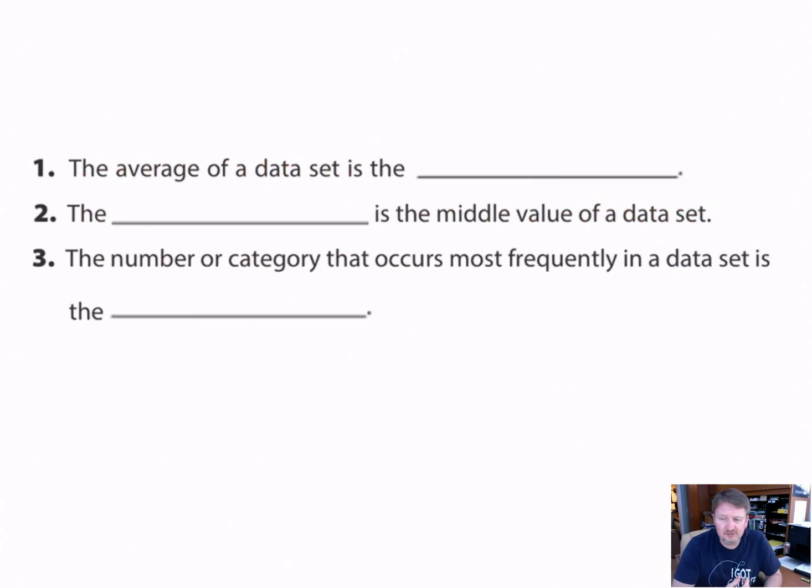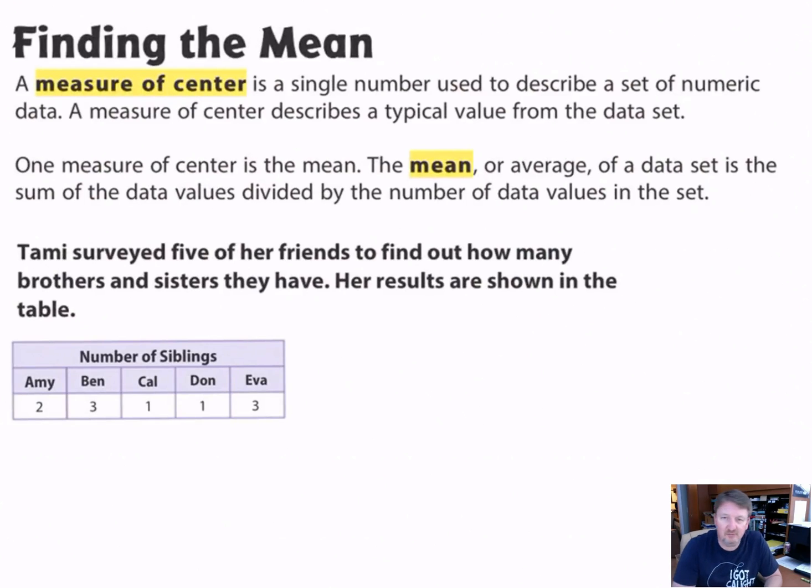Now this year you're going to learn new terms. The average of a data set is also called the mean. The median is the middle value of the data set. And finally, the number or category that occurs most frequently in a data set is the mode. That's the number that appears most often.